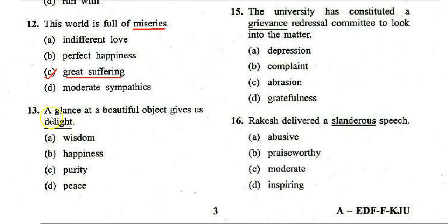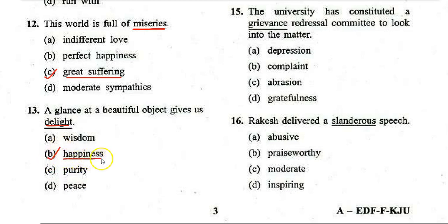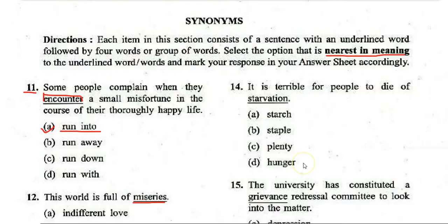Next: 'A glance at a beautiful object gives us delight.' Options: A. Wisdom, B. Happiness, C. Purity, D. Peace. The correct answer is B — 'happiness.' A glance at a beautiful object gives us happiness or delight — they mean the same thing.